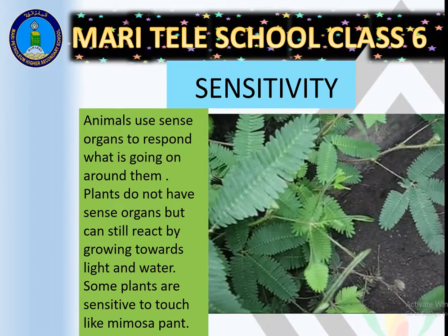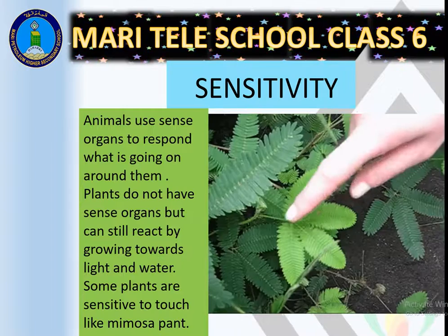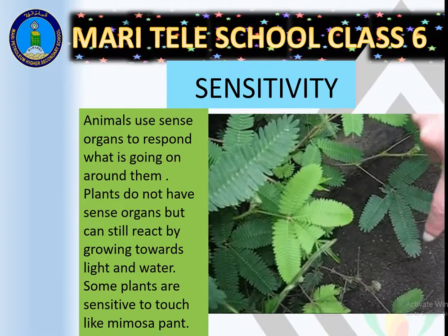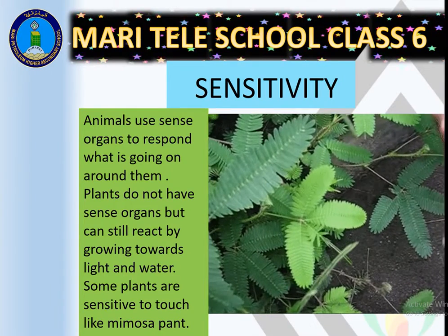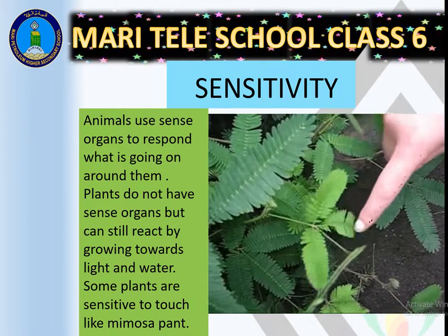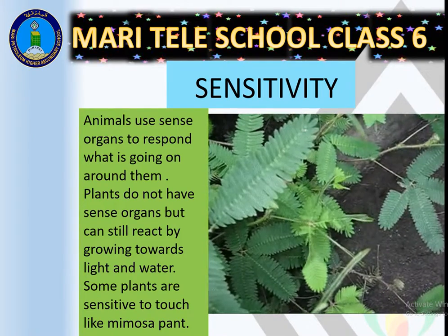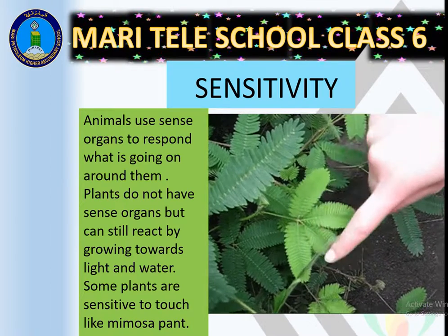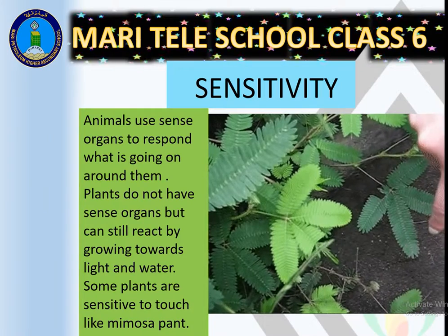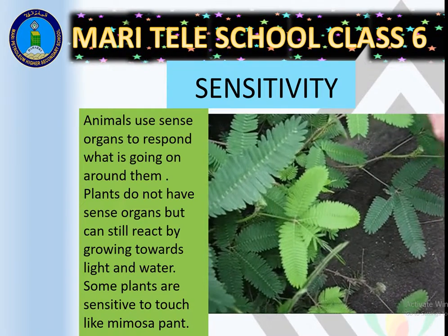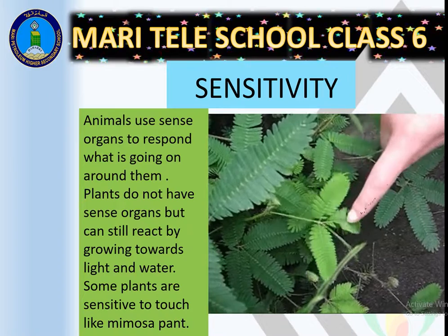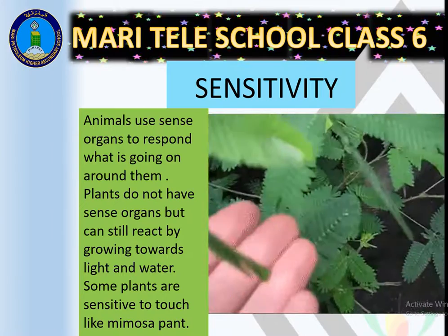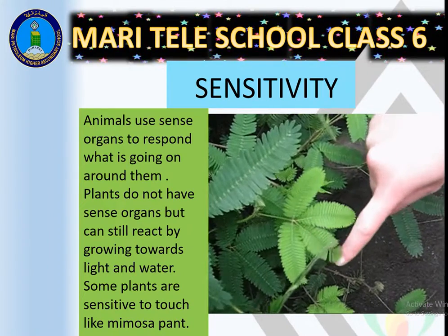Animals use sense organs — skin that feels hot and cold, nose, ears — they all respond to external changes in the environment. But plants, although they do not have sense organs, are also very sensitive. They even generate electrical signals, similar to the impulses in our nervous system.